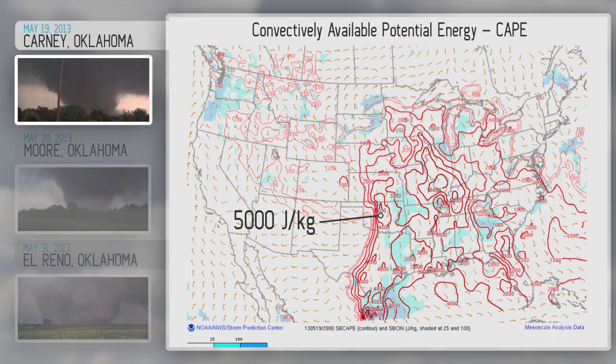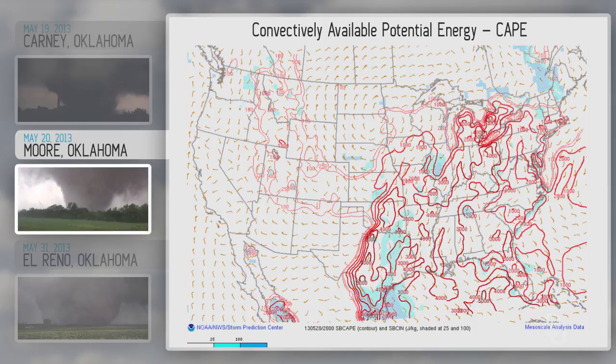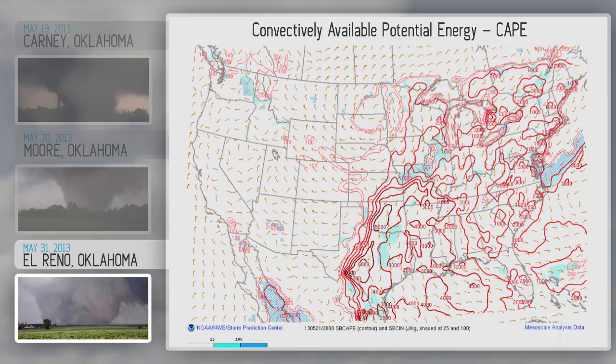The CAPE values are around 4,000 to 5,000 in the central strip of the state for the first event. And here's the convectively available potential energy map for the Moore tornado, May 20, 2013. Looks about the same — no CAPE or energy available in western Oklahoma, but in central sections and to the east, lots of moisture, lots of energy. These storms require lots of energy.